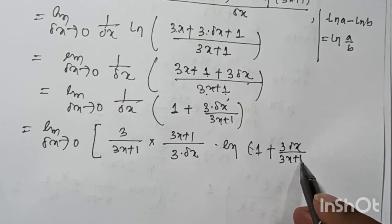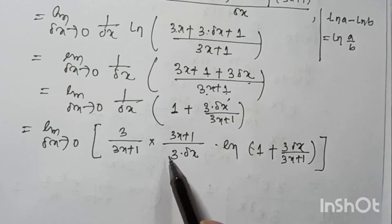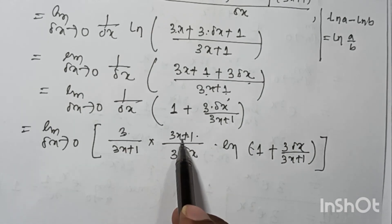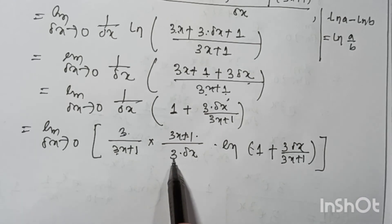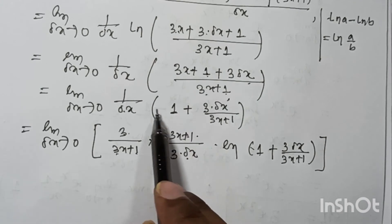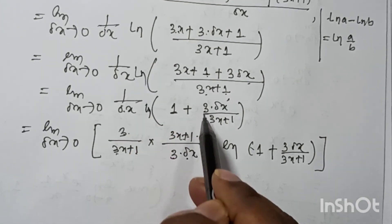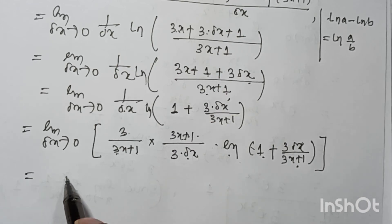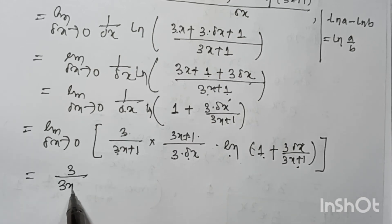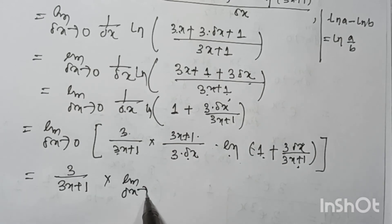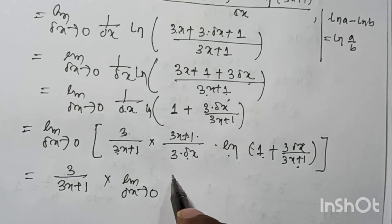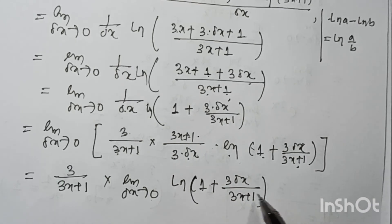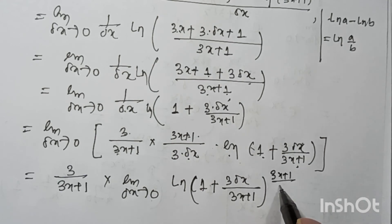After canceling (3x + 1) and the factor of 3 in numerator and denominator, we get: [3/(3x+1)] times limit as δx tends to 0 of ln(1 + 3δx/(3x+1)) raised to the power (3x+1)/(3δx), using the logarithm power property.